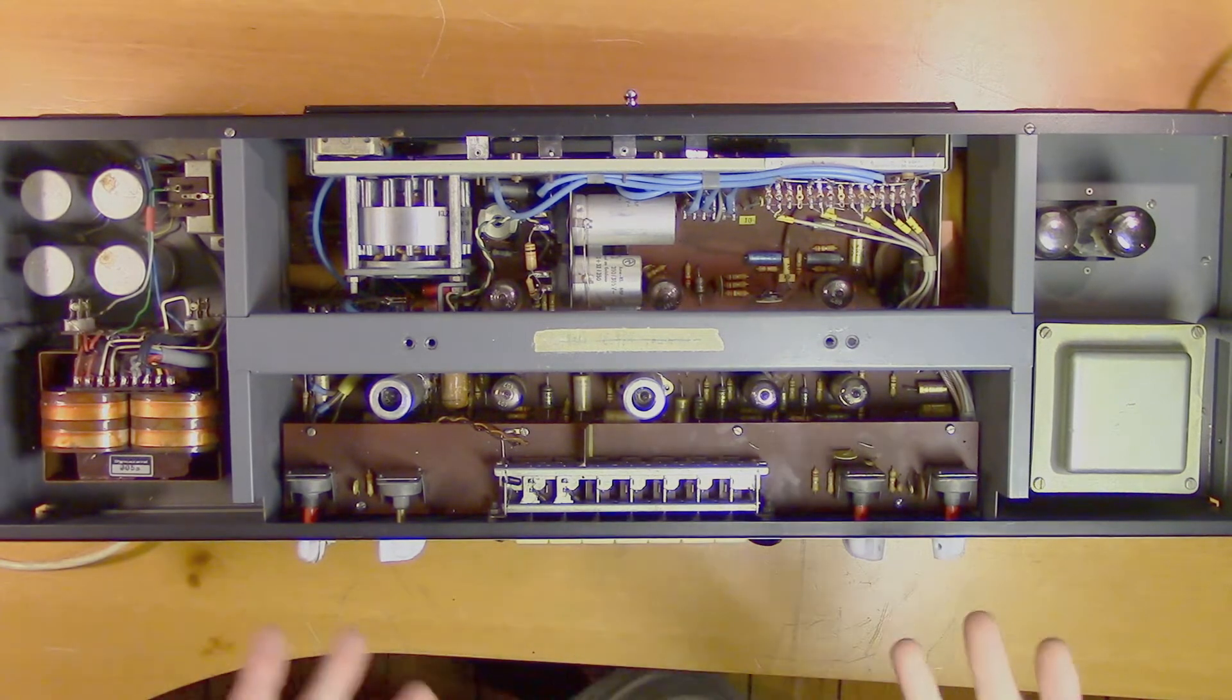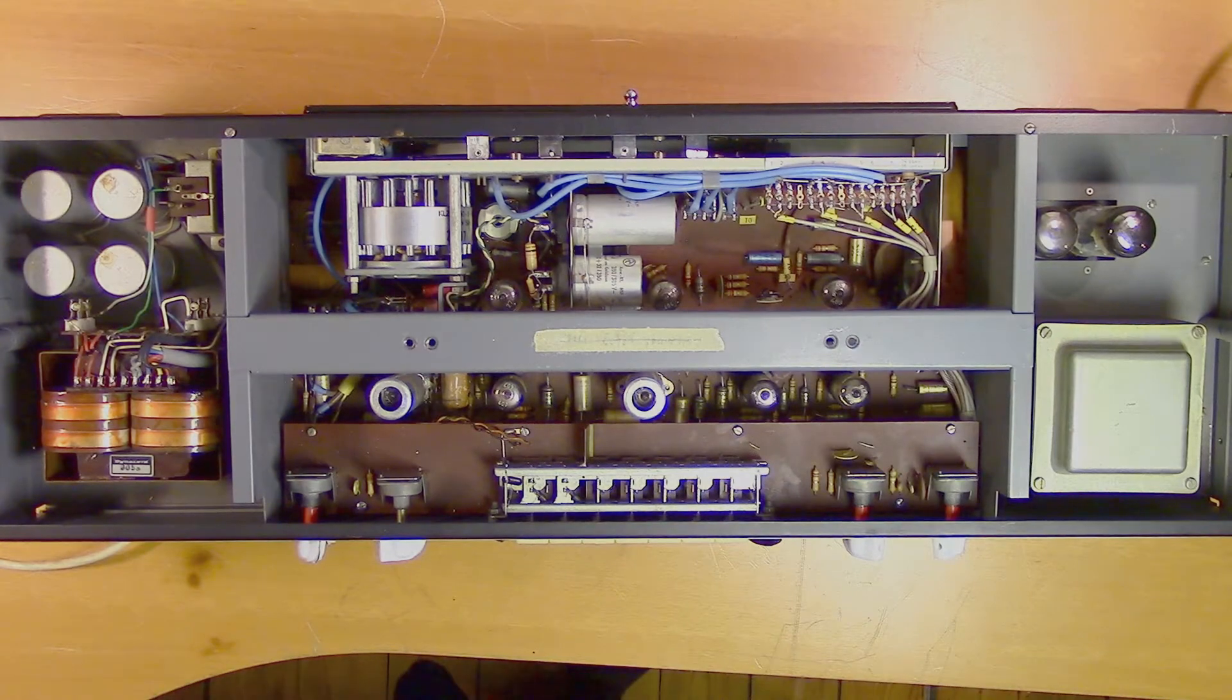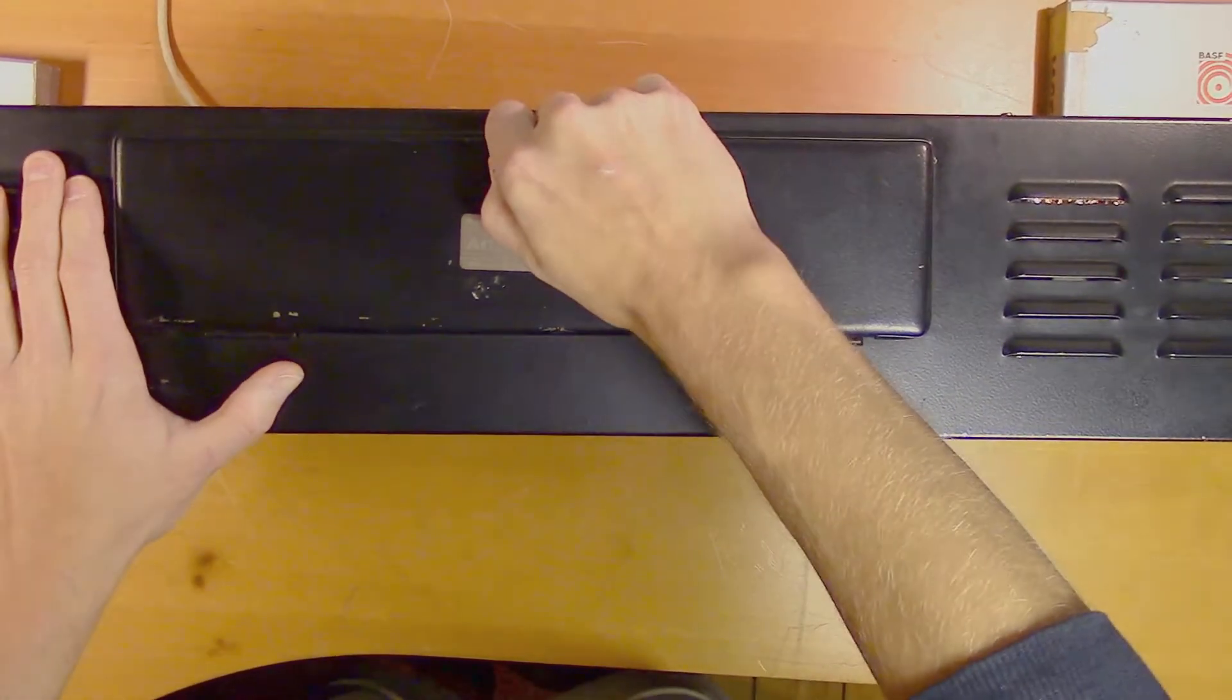Now the only thing that's not working exactly as it should is the tape section, and it probably just needs a new tape. Under this hatch on the back of the unit, we have the tape echo.